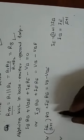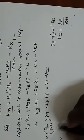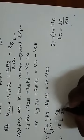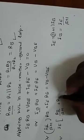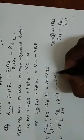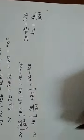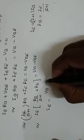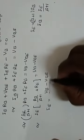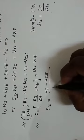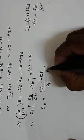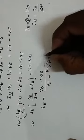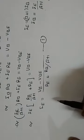Finally, IE का expression मिलेगा: IE = (VB − VBE) / (RE + RB/(β+1)). यह हमें emitter current का expression मिला.